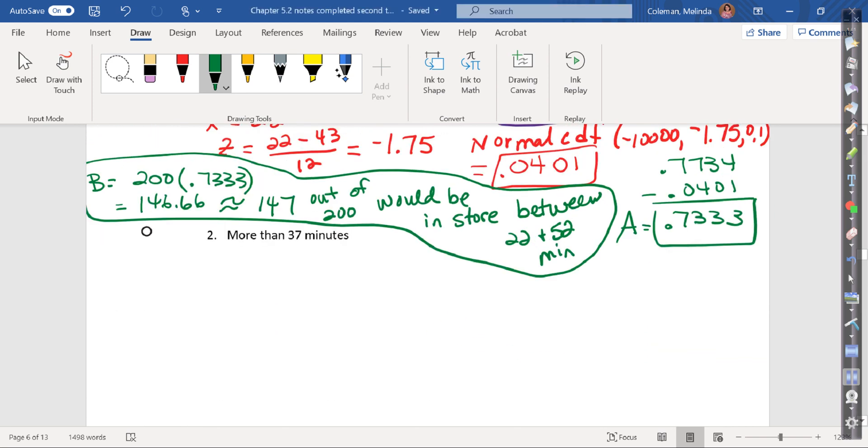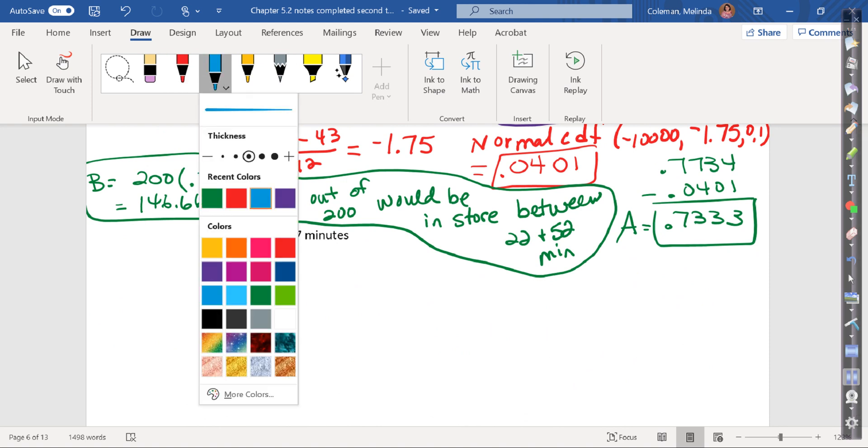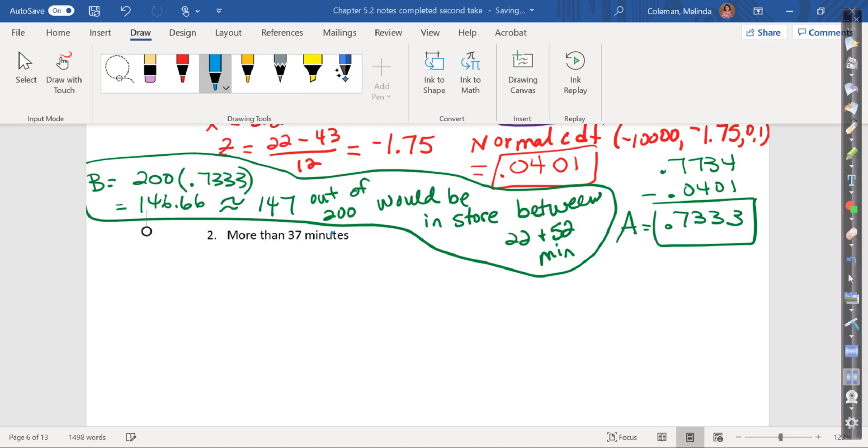Now obviously, if you had 500 shoppers, then the rate would stay the same. It would still be about 73%, but the number of people in the store would change. All right. Next one. More than 37 minutes. More than 37 minutes. So that would mean that x is going to be greater than 37. Because it's greater than 37, it's to the right of the graph, which means we're going to have to do some subtraction. We're going to have to subtract from 1.